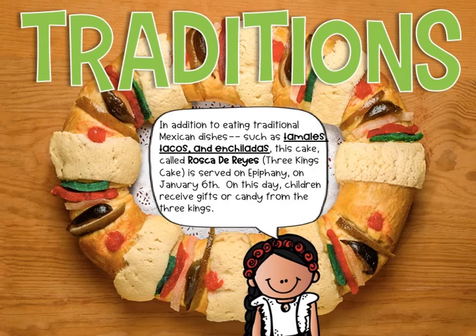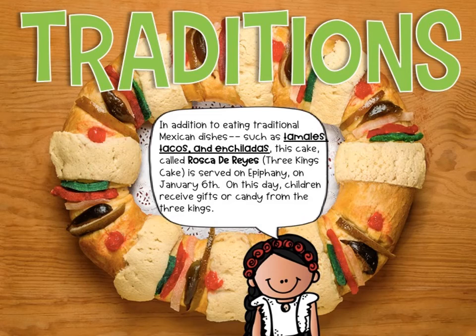In addition to eating traditional Mexican dishes such as tamales, tacos, and enchiladas, this cake called the Rosca de Reyes — Three Kings cake — is served on Epiphany on January 6th. On this day, children receive gifts or candy from the three kings. Just as the three kings came later on to see Jesus, this day is celebrated a little later. Don't forget to write in your scrapbook that they eat tamales, tacos, and enchiladas, as well as Rosca de Reyes.